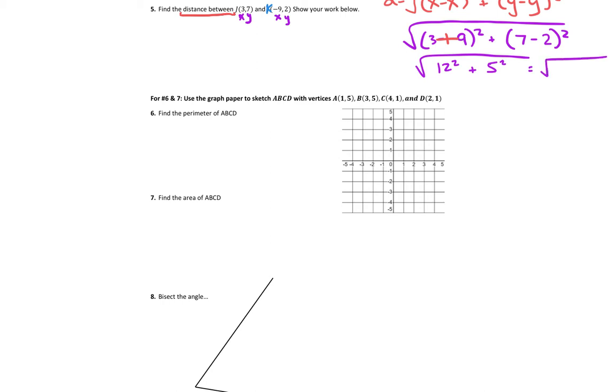So that looks like 144 plus 25. If we add those together, that's 169. And 169 is one of those perfect square roots. The square root of 169 is exactly 13. So the distance between point J and point K here would be exactly 13 units.